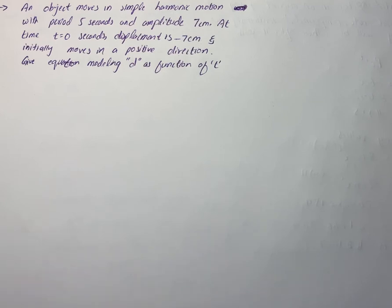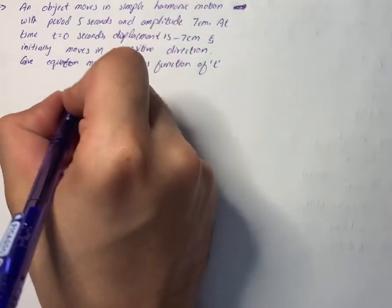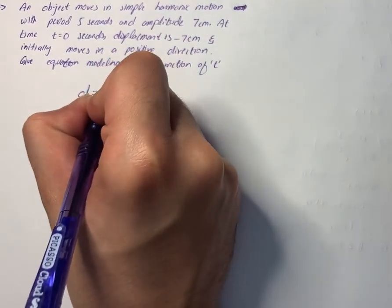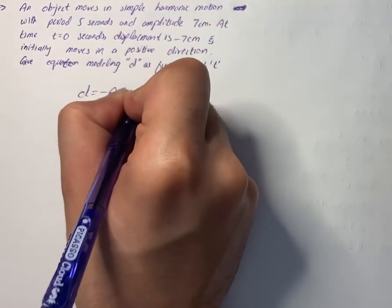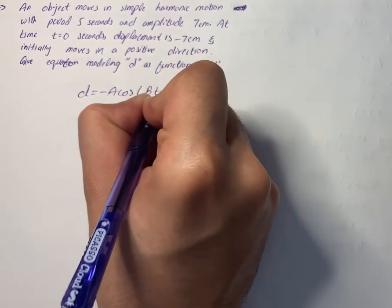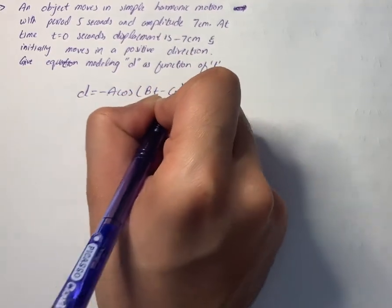The general equation for displacement as a function of time t can be written as: d equals minus A cos(Bt minus C) plus D.